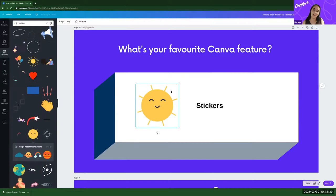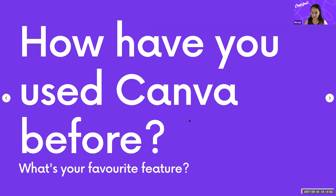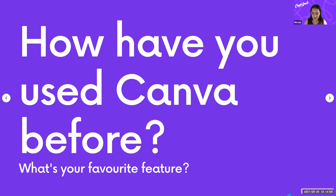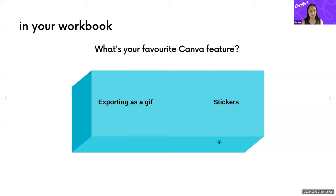If someone likes something in particular, I can teach you how to use it best in my presentation. Some responses coming in — frames, Giphy, customising colours. I also love exporting as a GIF. If you use Slack, you can upload your own emojis — what I often do is drop in a sticker, export it as a GIF and then make my own emojis, which is super fun.